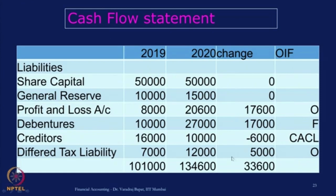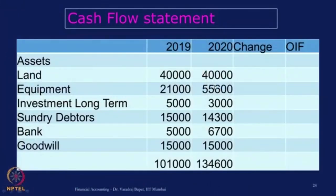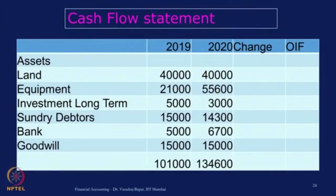For every item in the balance sheet, assign O, I, or F — or CA/CL, which is a part of O. This will help us prepare the cash flow statement. In assets again there are changes: land — no change. Equipment has gone up from 21,000 to 55,600. We have made investment in equipment; new equipment has been purchased, so write the change and mark it as an I item — 34,600, investing.